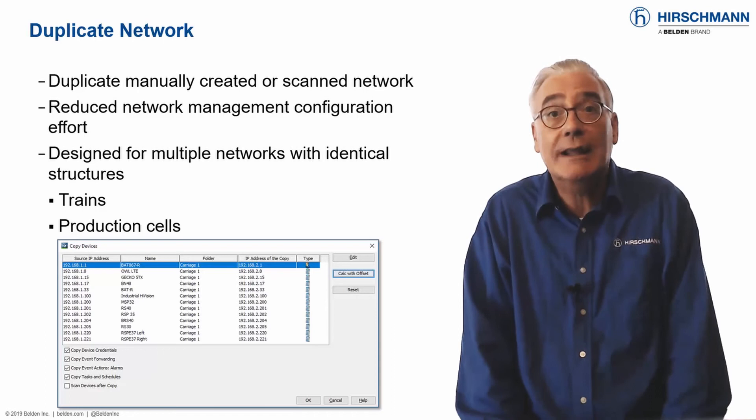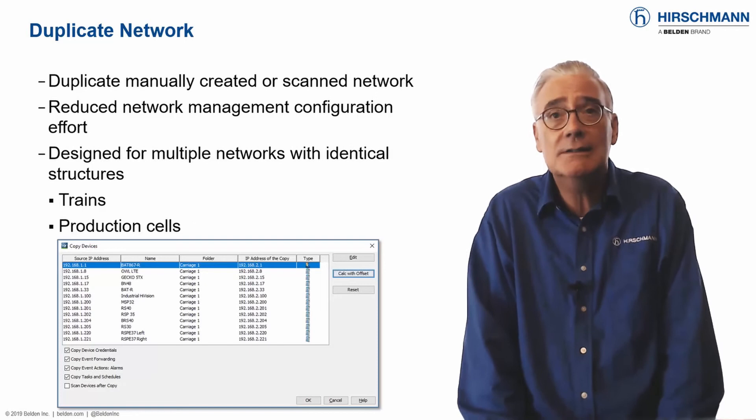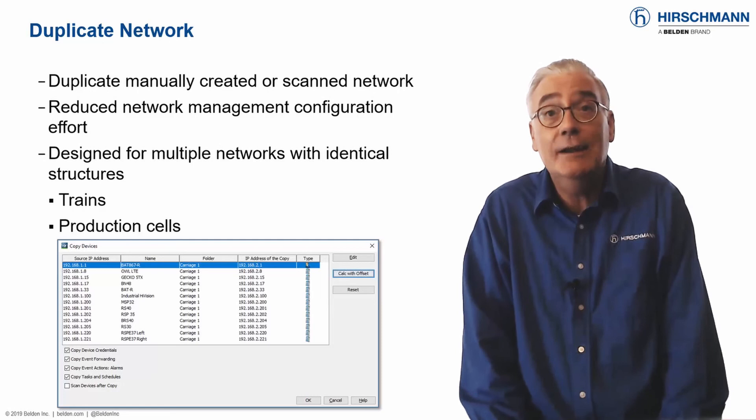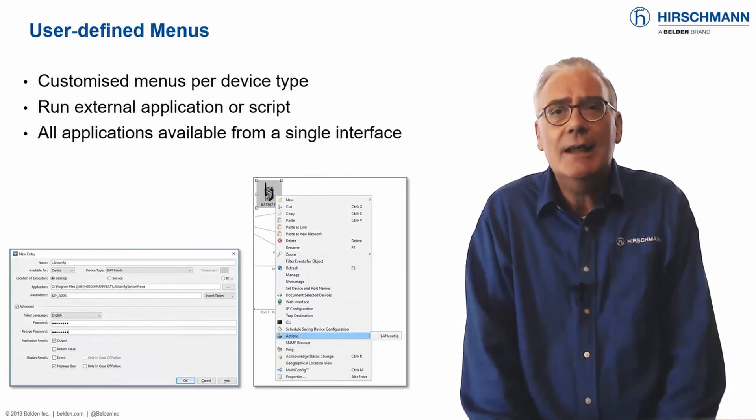The duplicate network function can create these networks, including devices, IP addresses, passwords, alarms, and event forwarding. Of course, this is a niche function for certain OT networks, but what is niche today may be mainstream OT tomorrow.